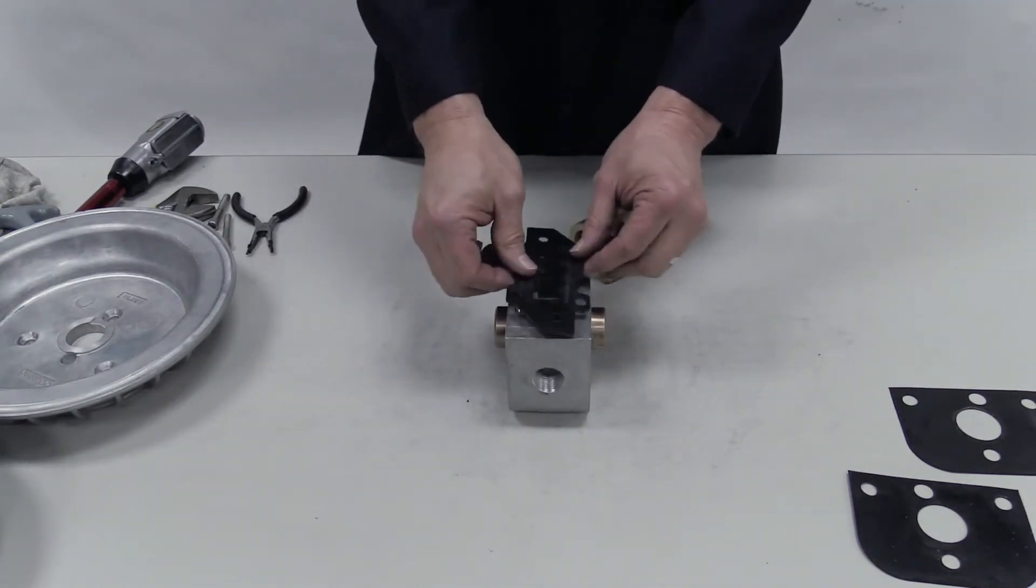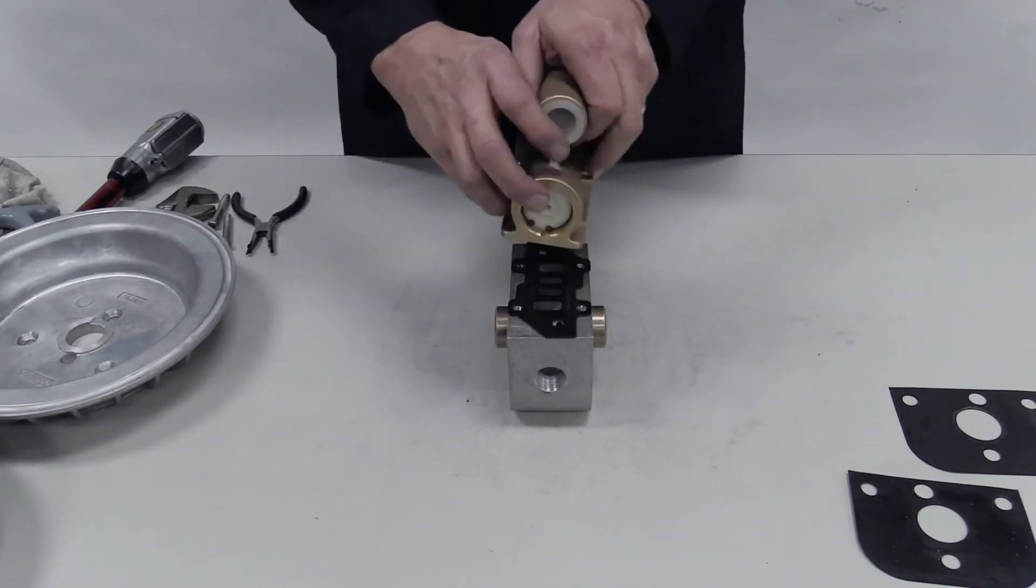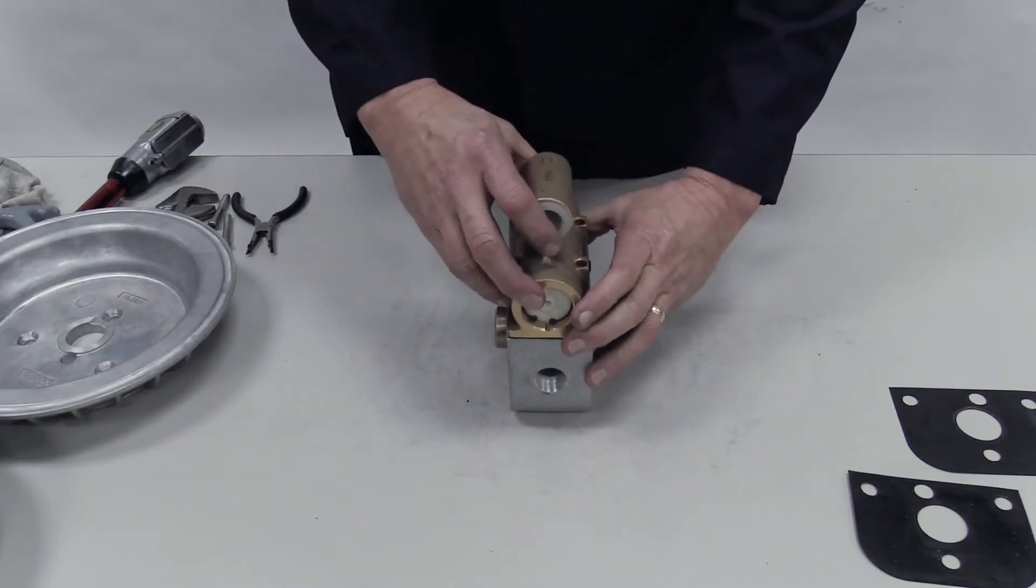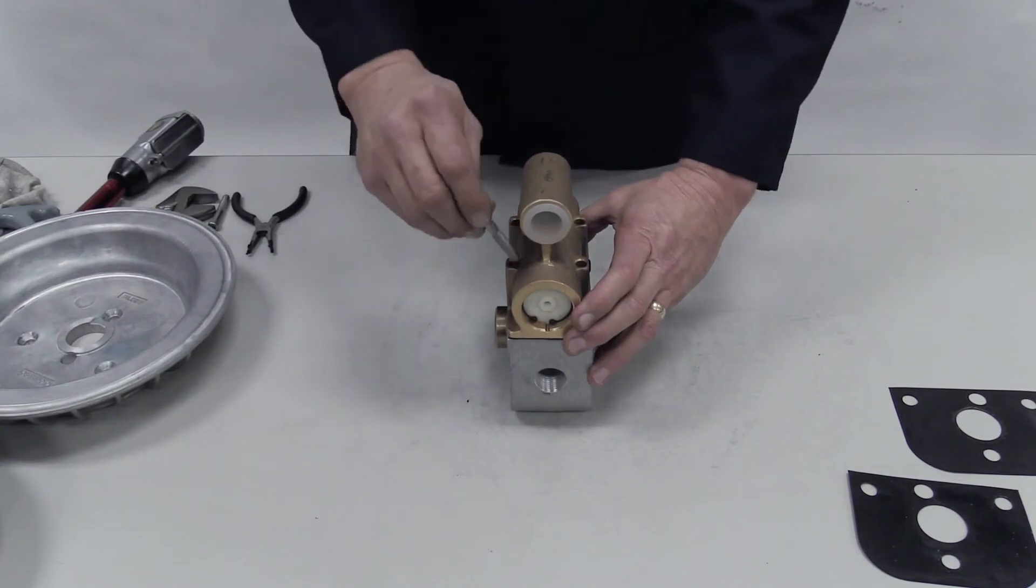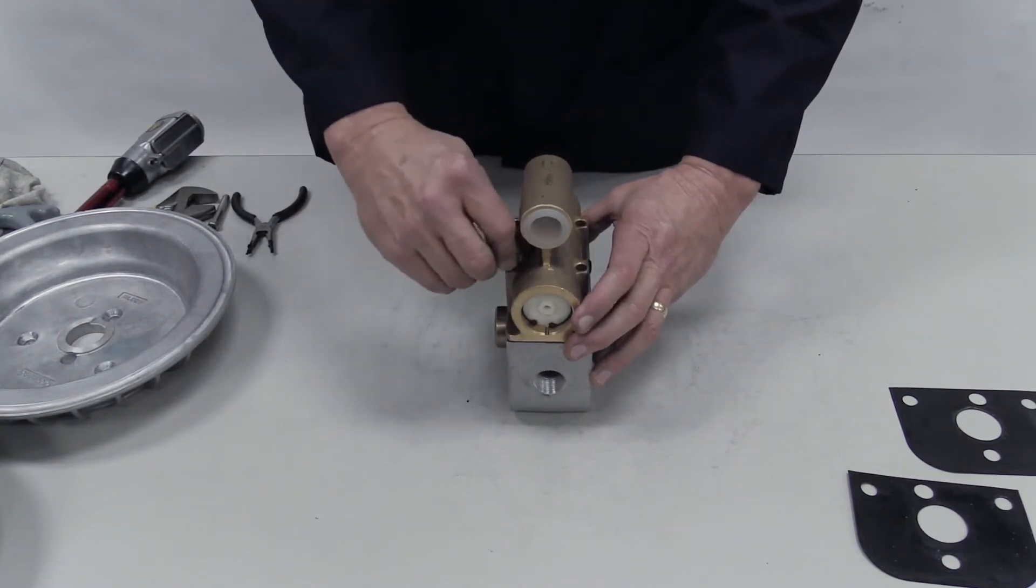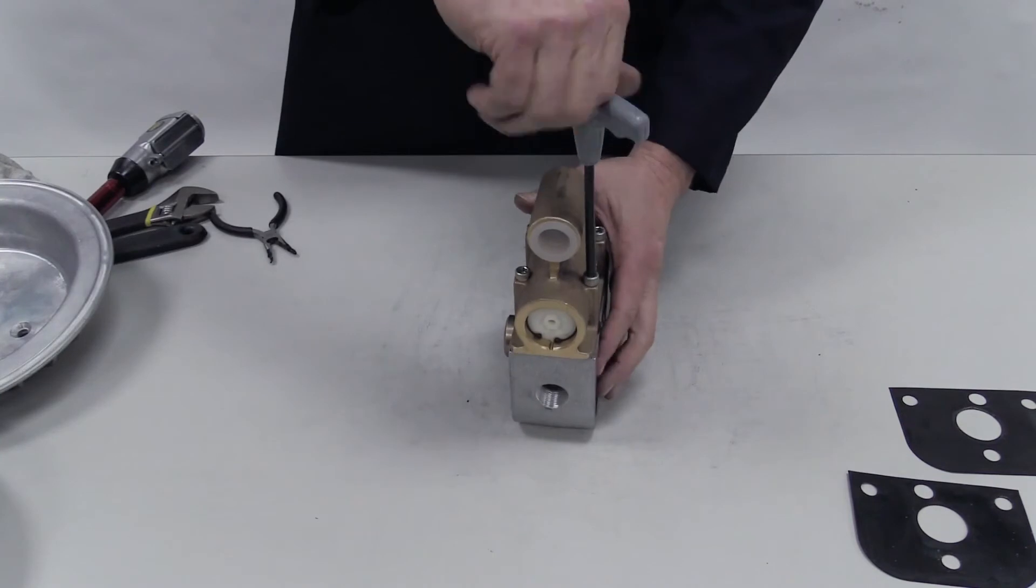Put the air valve gasket on the outside of the center block. The gasket must be aligned correctly or the pump will not operate properly. Insert the four air valve screws and torque to specifications.